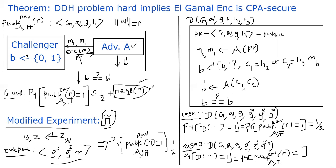Now we design a distinguisher algorithm D that takes arguments G, Q, g, H1, H2, H3. H1 is G^X where X is the private variable. The adversary gives two messages M0 and M1 to the distinguisher. The distinguisher randomly generates a bit B, computes ciphertext C1 = H2 and C2 = H3 · M_B, where M_B is M0 or M1 depending on B. It publishes C1, C2 to the adversary. The goal of the adversary is to figure out whether the distinguisher chose M0 or M1.